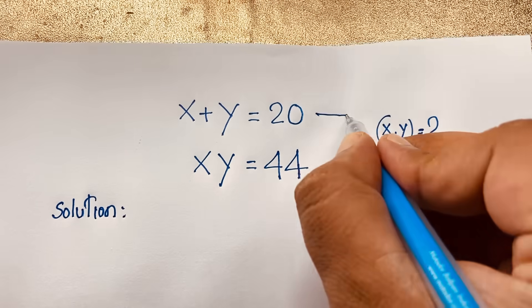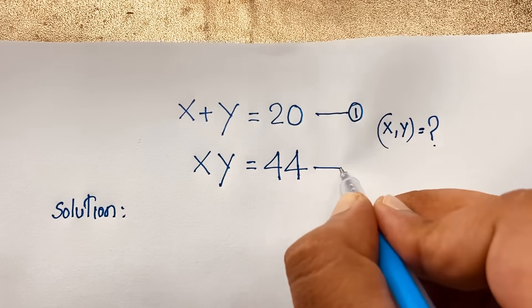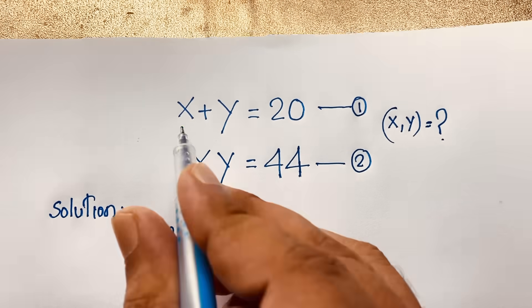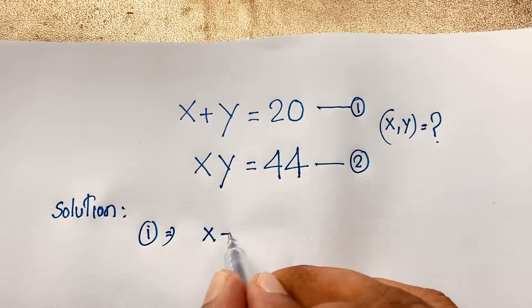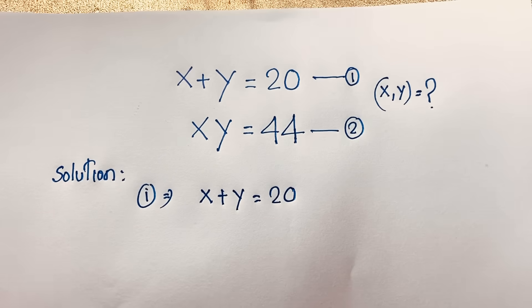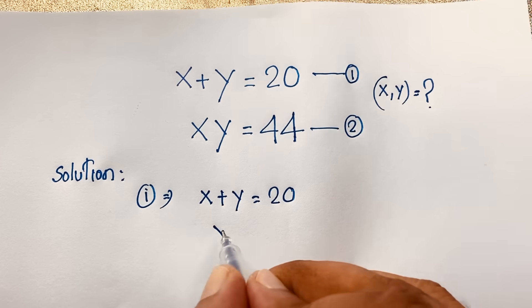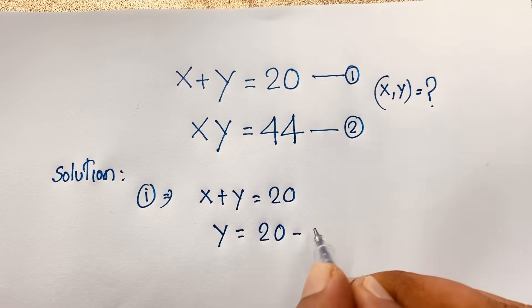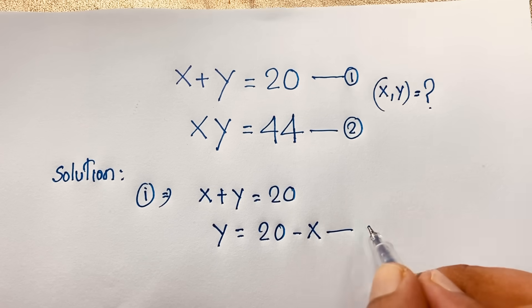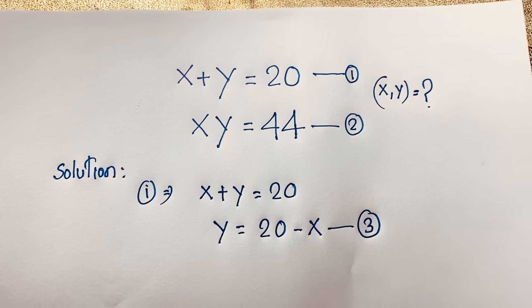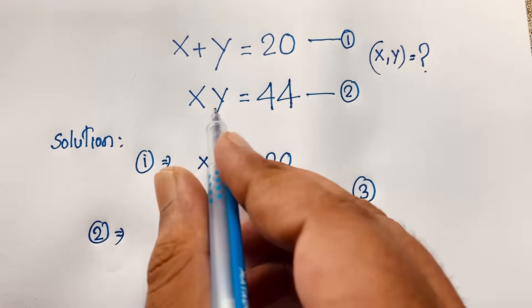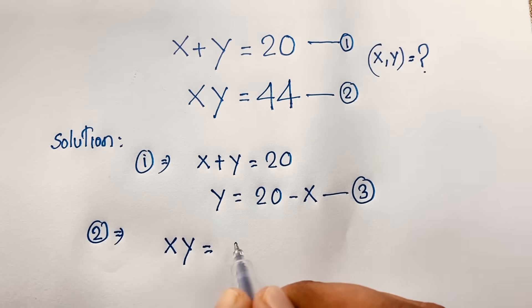This is our first equation and this is our second equation. From the first equation, x plus y is equal to 20. You can see here that y is equal to 20 minus x — I just move the x to the other side so it becomes negative x. This is our third equation. From the second equation, xy is equal to 44.